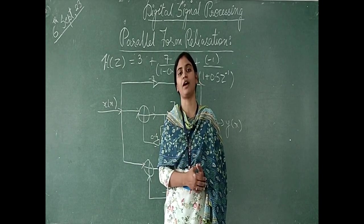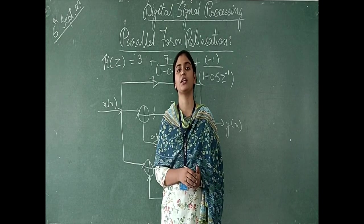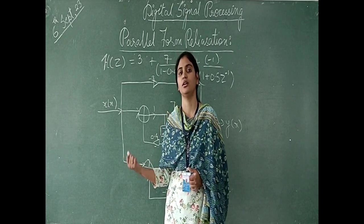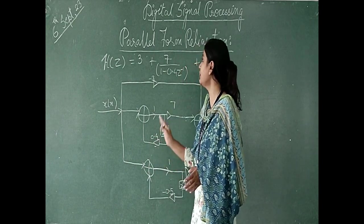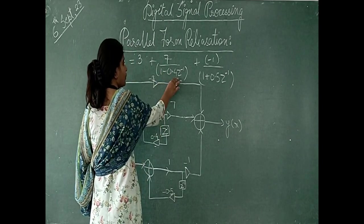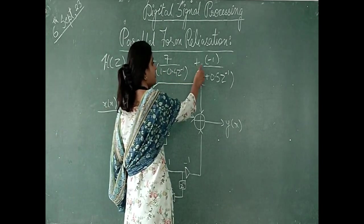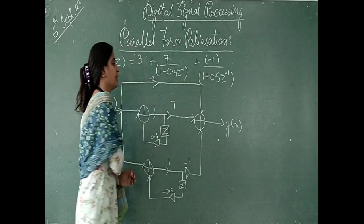We have to compare a and b values in the last one. Now we will make the main structure which is our parallel form realization. So it was simple, our 3 plus 7 upon 1 minus 0.4 z inverse and plus minus 1 upon 1 minus 0.5 z inverse.